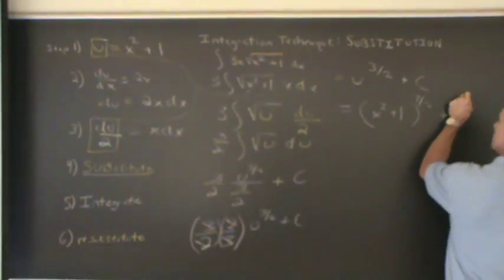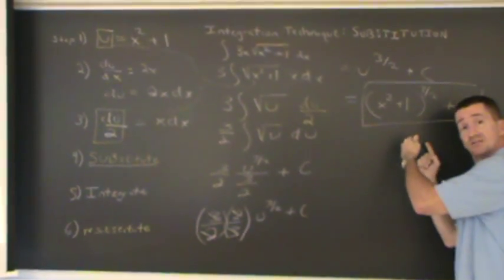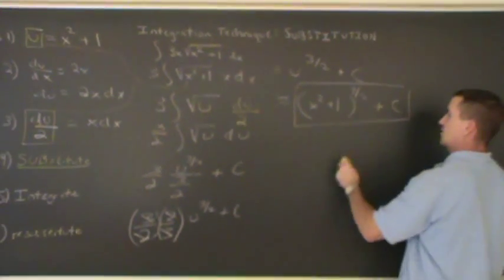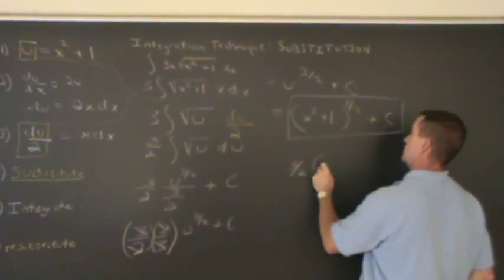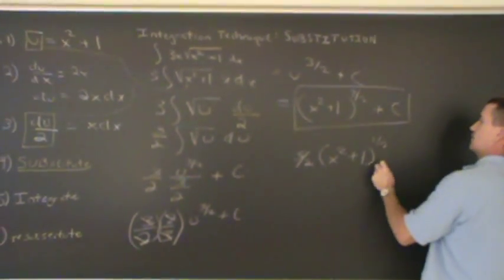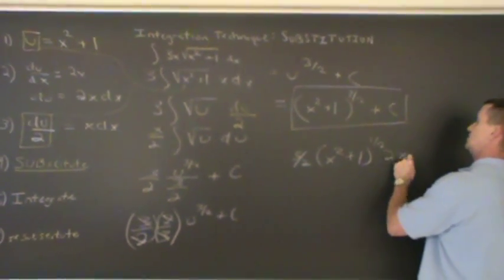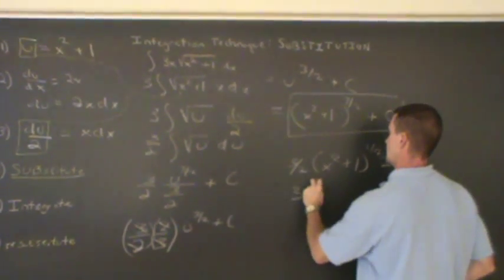And we can check this. Here's our answer. How can we check this? Let's get the derivative of this. We get the derivative of this, we should come right back to that. The derivative would be three halves, decreases by one, and then I perform chain rule. The derivative of this is 2x, and the two and the two cancel. And sure enough,